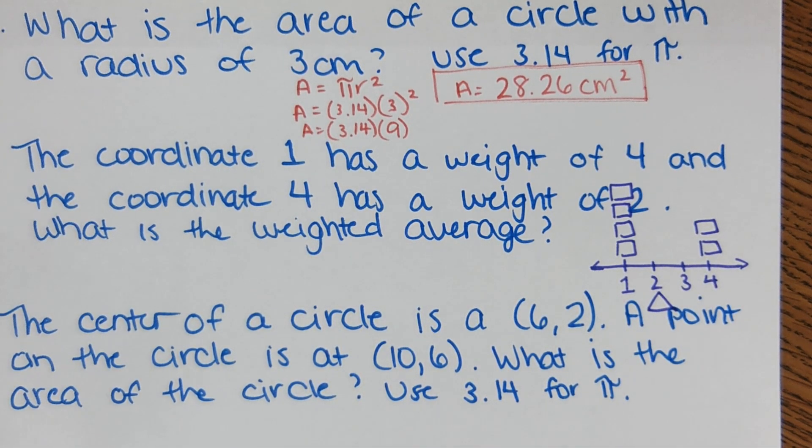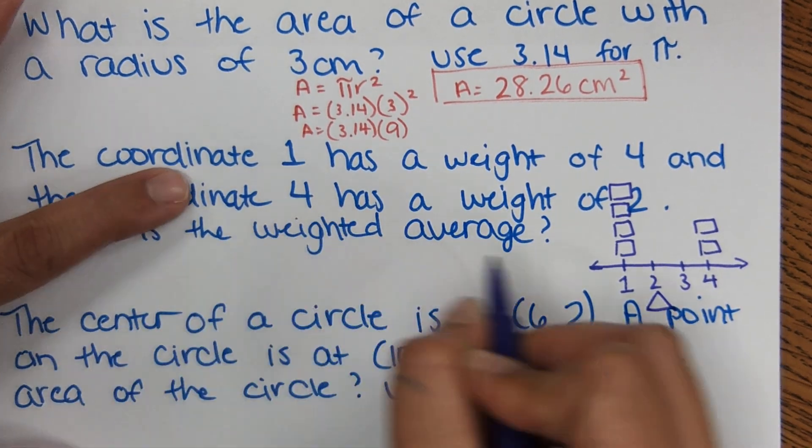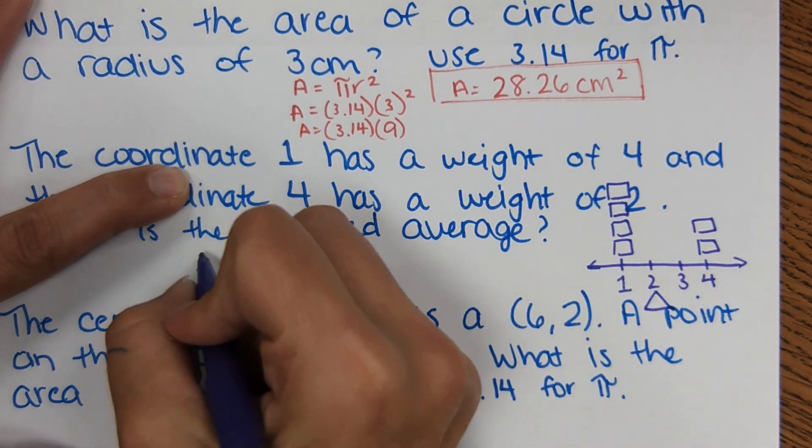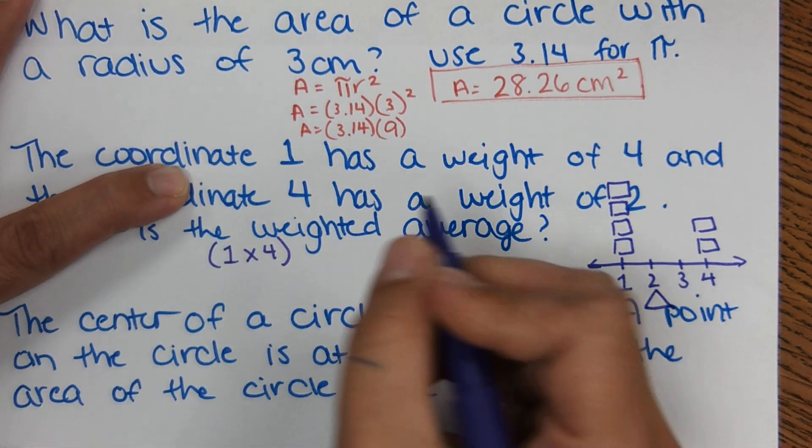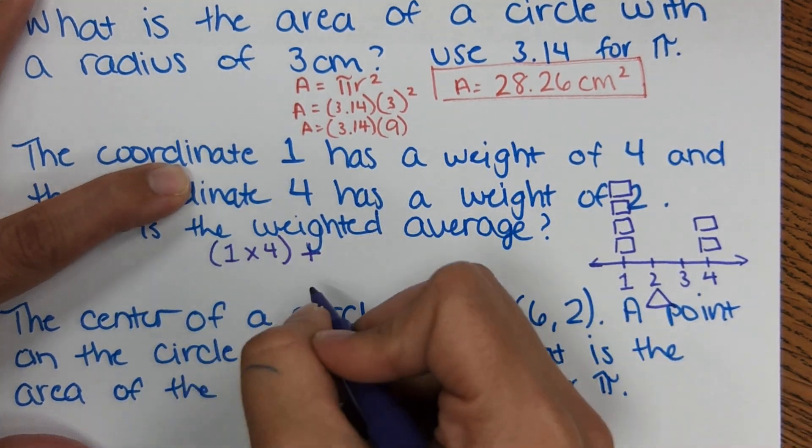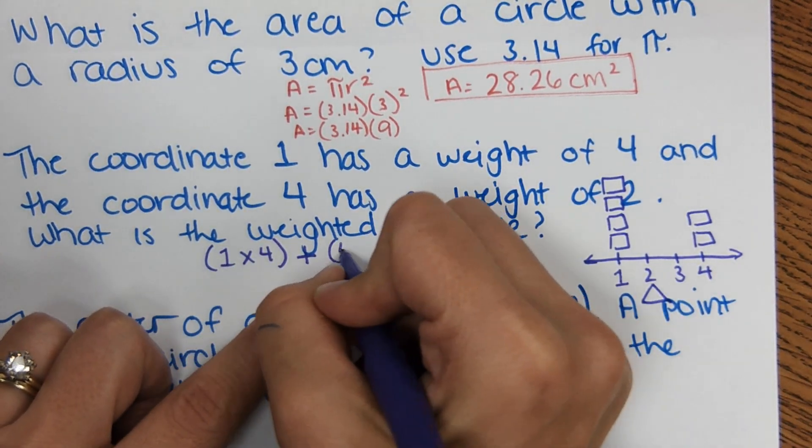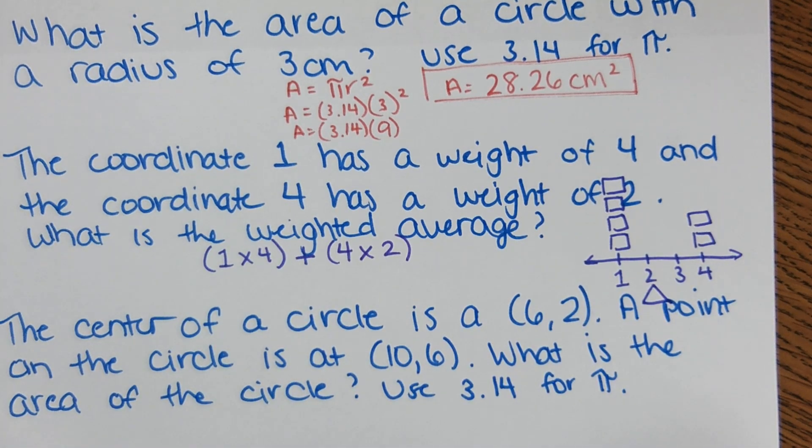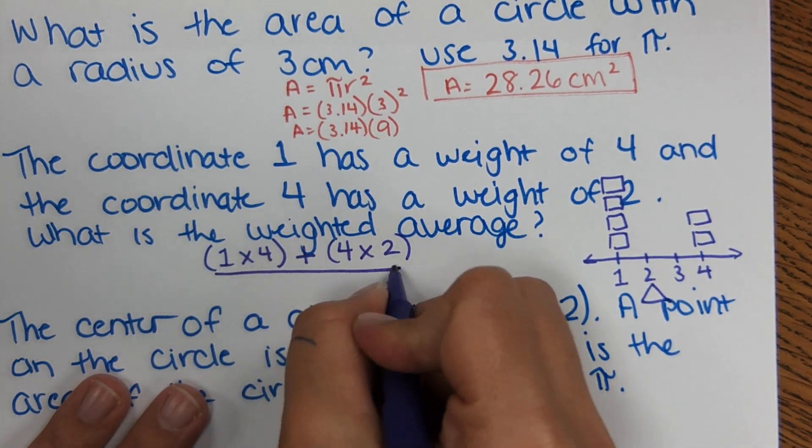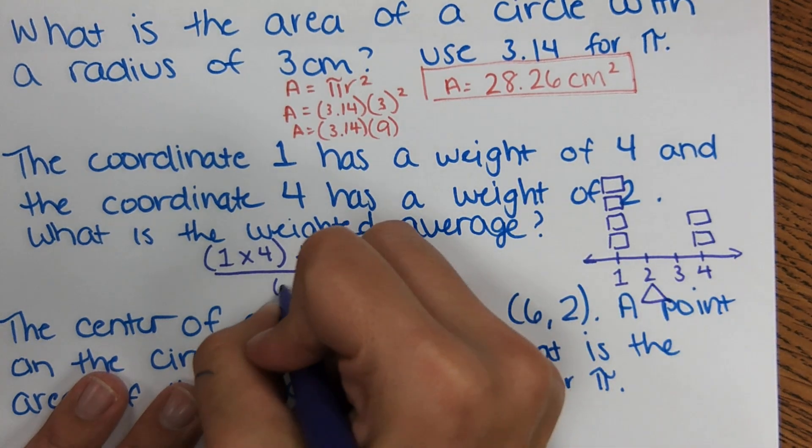So if you don't remember the equation, you could visually kind of draw it out and come to a really close conclusion. The equation for this looks like this and it's not on the reference sheet. So coordinate 1 has a weight of 4, so we're going to do 1 times a weight of 4 plus coordinate 4 has a weight of 2, so 4 times 2 weights over the total weights, so there are six weights total.